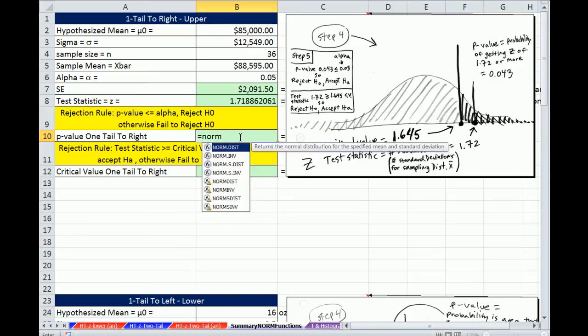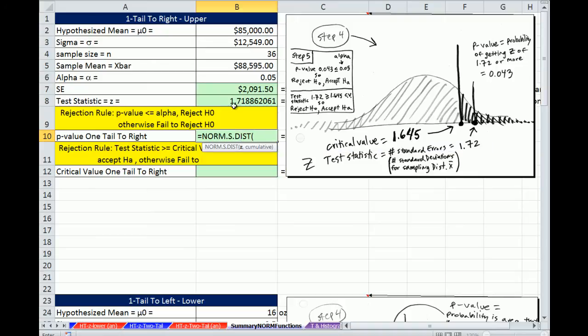And these are the NORM.S. These are the standardized normal bell-shaped distributions. We're going to use the DIST to go from a z comma 1, going from a z to a probability. Now that's from negative infinity up to our z, and that's not what we want. So we have to take 1 minus.